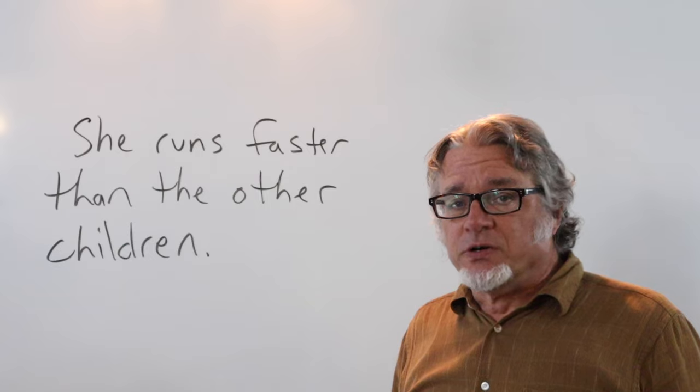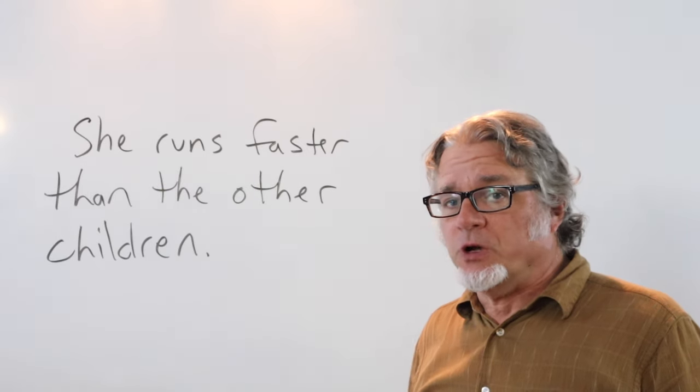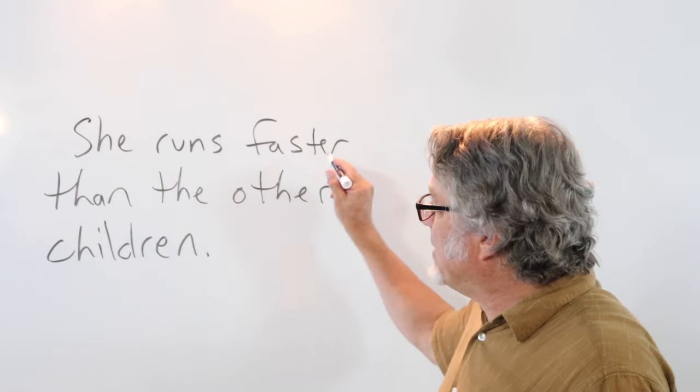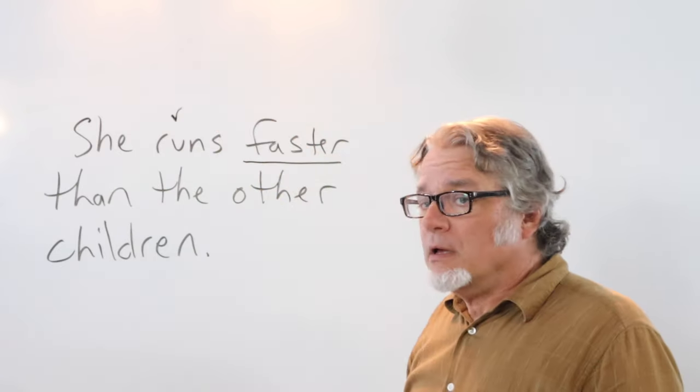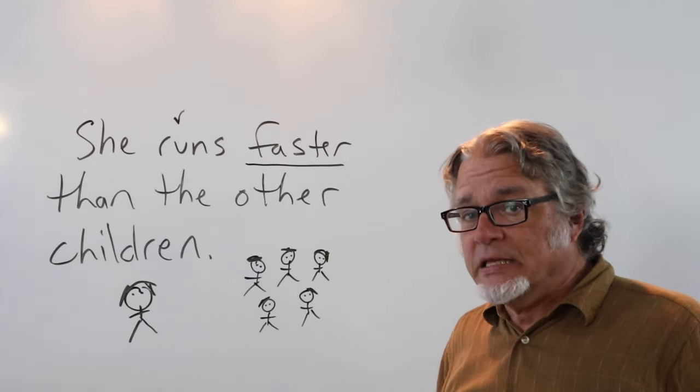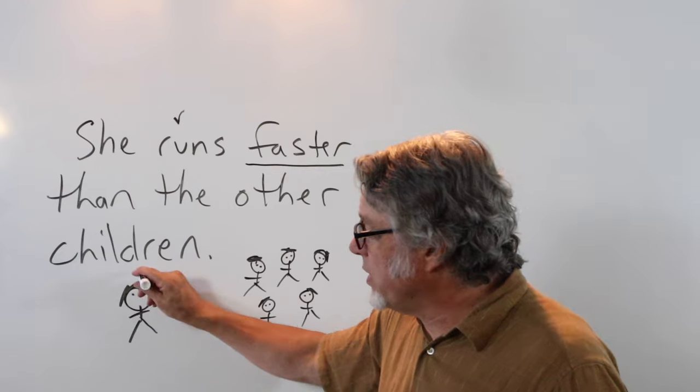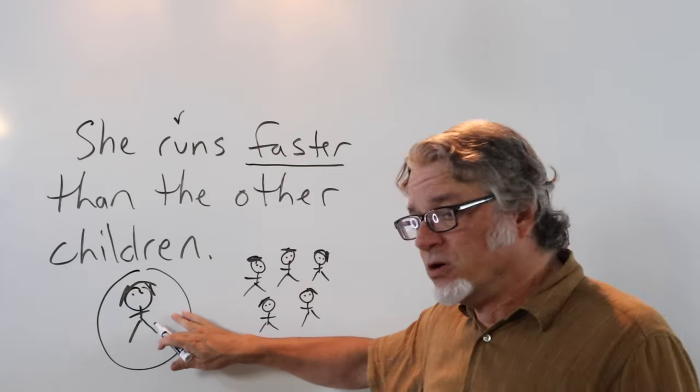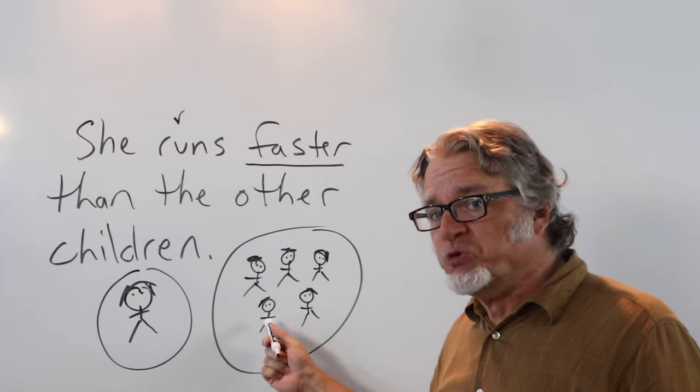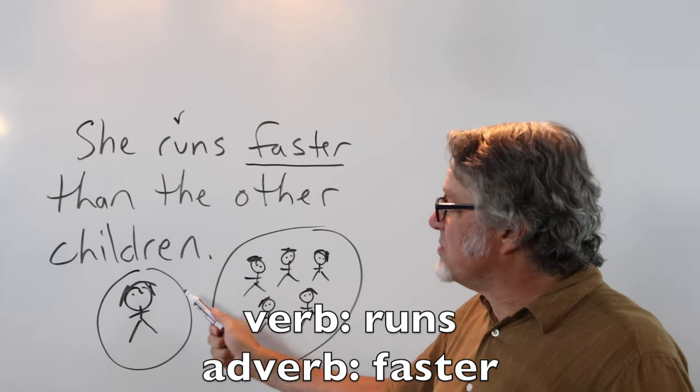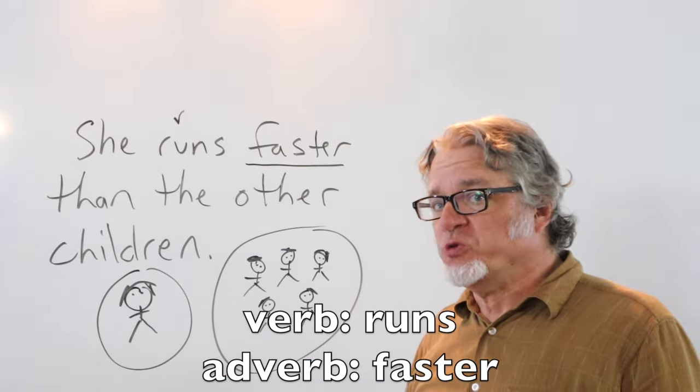She runs faster than the other children. Here's the adverb and it's modifying the verb. The comparison in this case is between this girl and this group of other children. She runs faster than the other children.